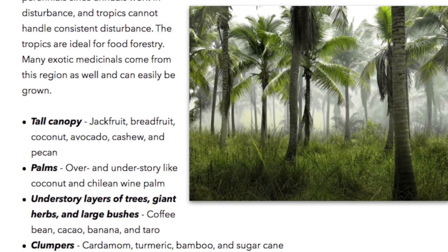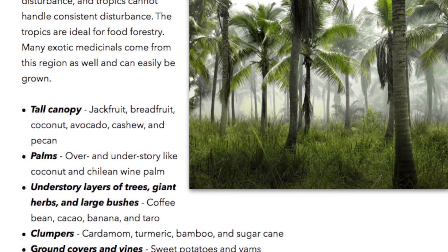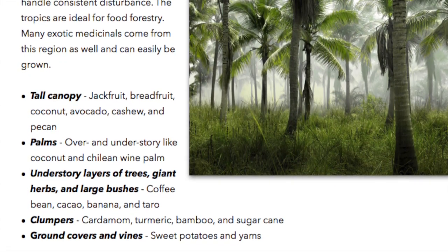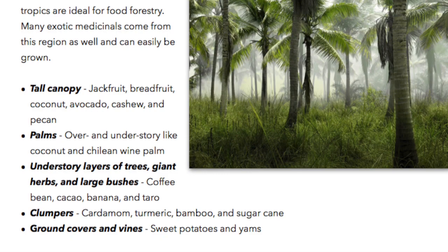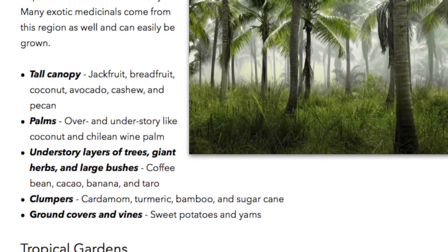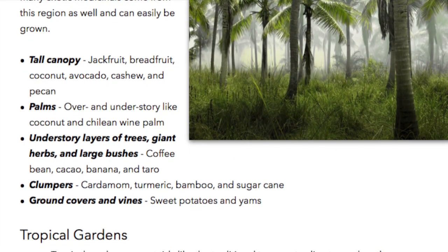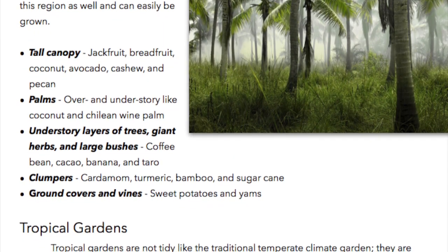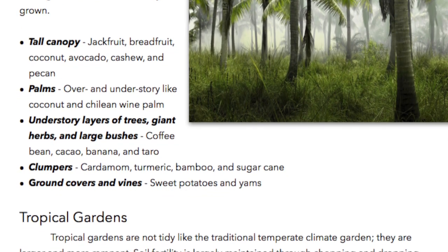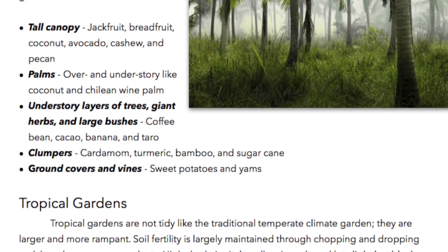Tall canopy species include jackfruit, breadfruit, coconut, avocado, cashew, and pecan. Palms such as coconut and Chilean wine palm serve as both over- and understory layers. Understory layers include trees, giant herbs, and large bushes such as coffee bean, cacao, banana, and taro. Clumpers include cardamom, turmeric, bamboo, and sugar cane. Ground covers and vines include sweet potatoes and yams.